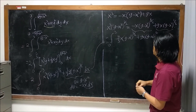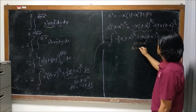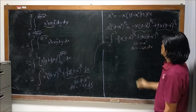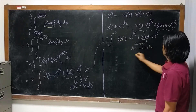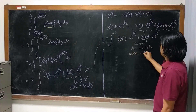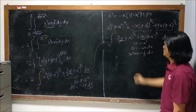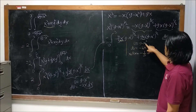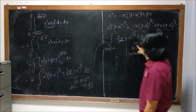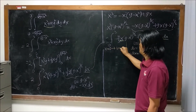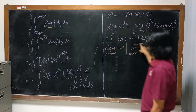Let u equal 9 minus x squared, so du equals minus 2x dx, meaning x dx can be replaced by minus one-half du. We also change the limits of integration: when x equals 0, u equals 9; when x equals 3, u equals 0.